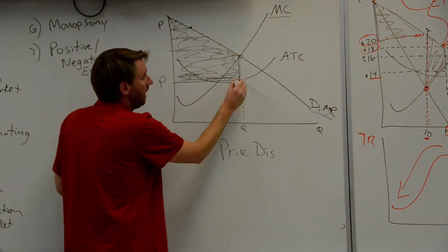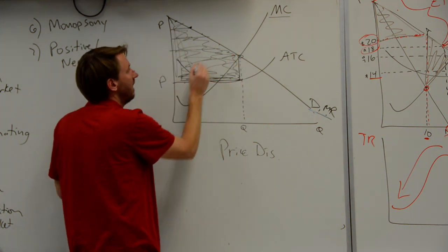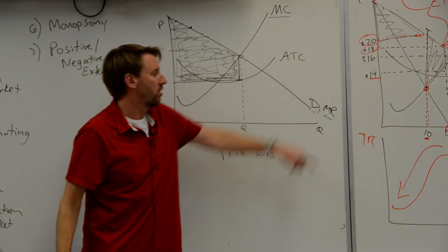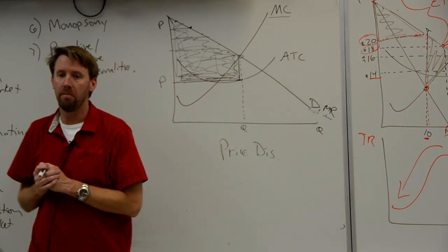You want to get to MR equals MC above ATC and it's everything above that. That is where demand equals marginal revenue. That's the price discriminating monopoly. That's it.